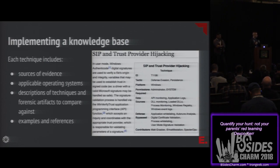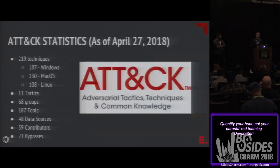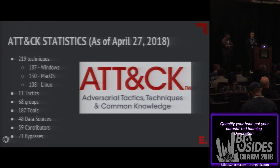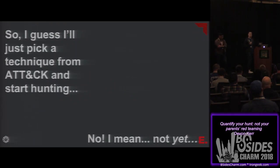To give you an idea of what a technique looks like: it has tactics describing motivation, the OS it applies to, and data sources — the places where you need visibility to detect it. At the bottom are links to various presentations. By the numbers: 219 techniques as of the April release. There are 68 threat groups associated with these techniques and 39 contributors, including external community contributors developing and sharing this material.